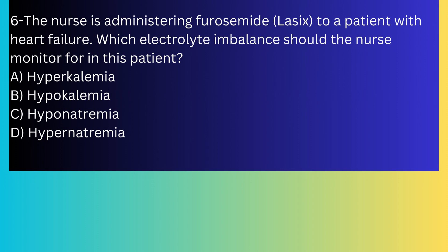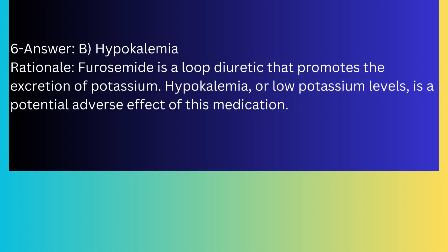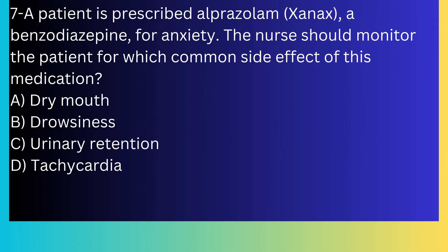Question number six: The nurse is administering furosemide (Lasix) to a patient with heart failure. Which electrolyte imbalance should the nurse monitor for in this patient? A) Hyperkalemia, B) Hypokalemia, C) Hyponatremia, D) Hypernatremia. The answer is B, hypokalemia. Furosemide is a loop diuretic that promotes the excretion of potassium; hypokalemia, or low potassium levels, is a potential adverse effect of this medication.